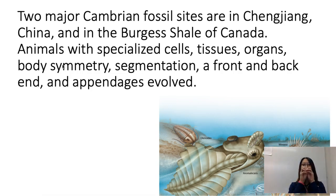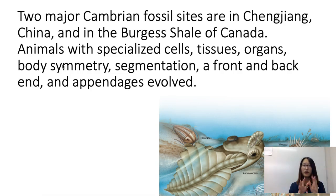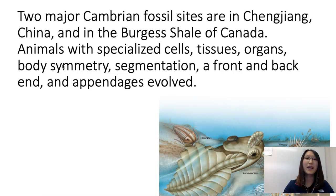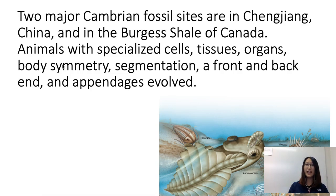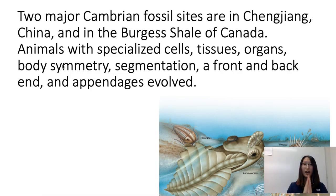If you think about a starfish, it kind of shoots out from the middle and in all directions the body looks the same — that is radial symmetry. Human beings have bilateral symmetry, which means you can look at the middle line of the organism and both sides will look the same.